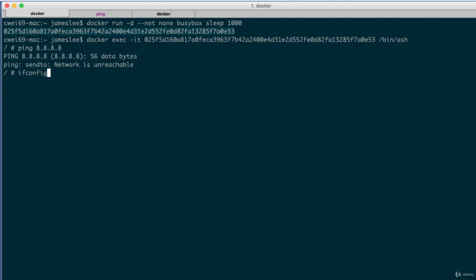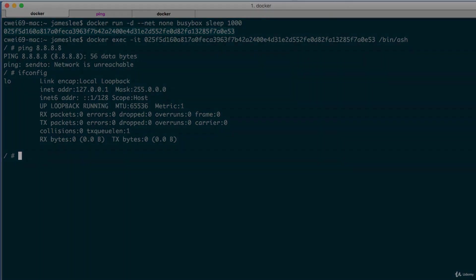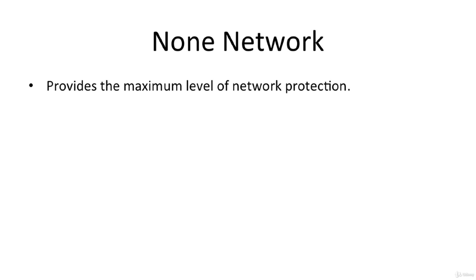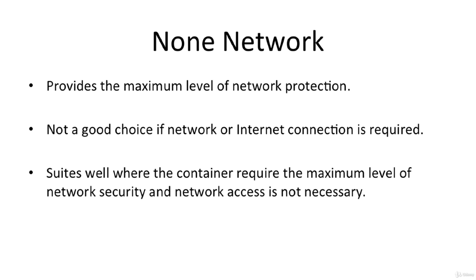We run the ifconfig command inside the container to list all network interfaces. There is only one: a loopback interface, not connected to any networks, assigned the special IP address 127.0.0.1. It is mainly used by internal applications on the localhost to communicate with each other. The biggest benefit of this isolated network model is that it provides maximum network protection since connections cannot be reached from outside the host. However, this model won't be a good choice if network or internet access is required — for example, if the application needs to make HTTP requests to the outside world.